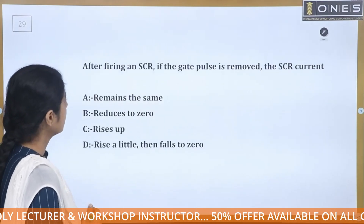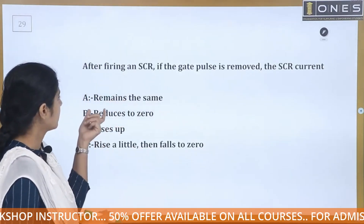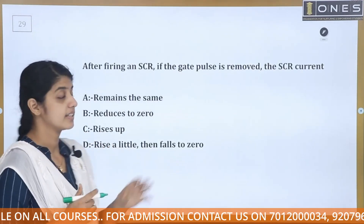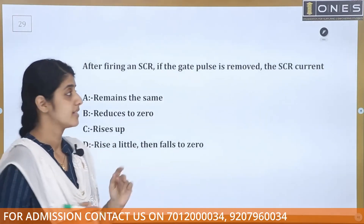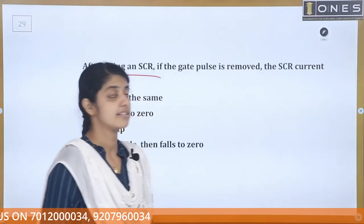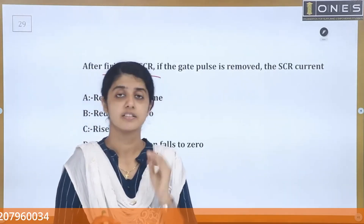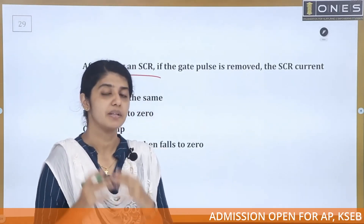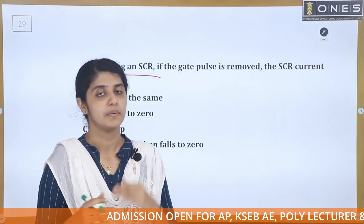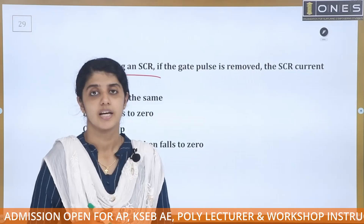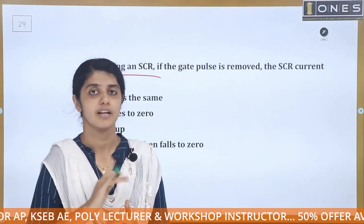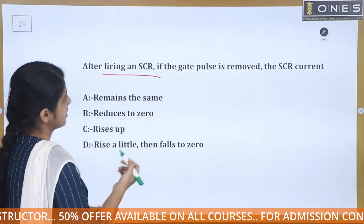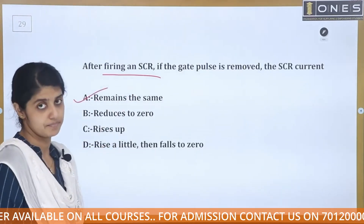After firing an SCR, if the gate pulse is removed, the SCR current remains the same — it does not reduce to zero. Once the SCR is triggered, removing the gate signal does not turn it off. The current continues to flow normally because the SCR latches into conduction.